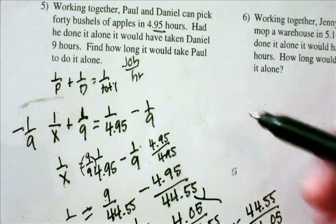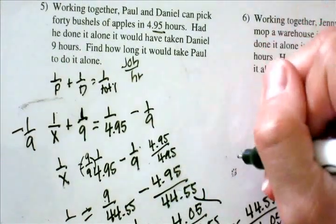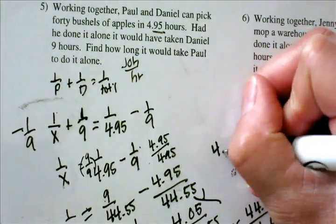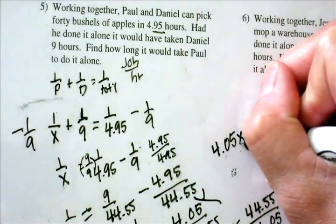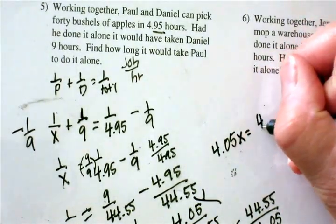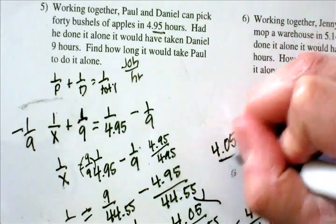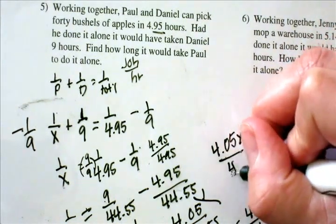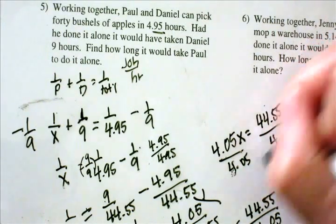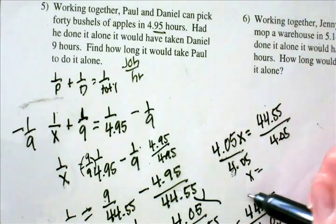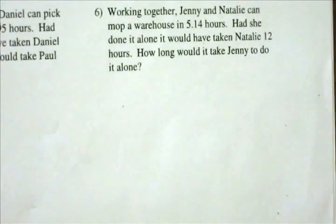If you can't do the inverse, you can always cross multiply. You would get 4.05x equals 44.55, then divide both sides by 4.05 — exactly the same result.